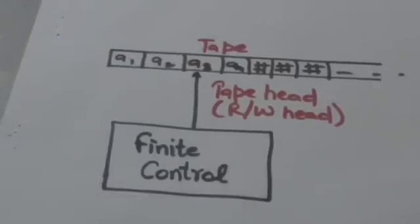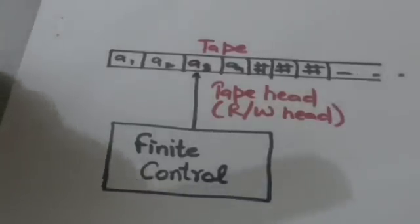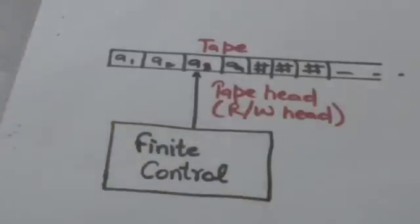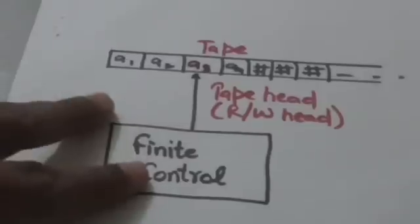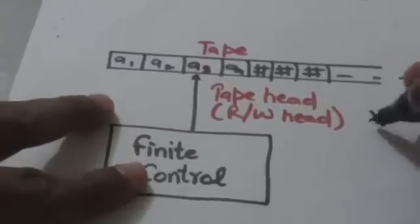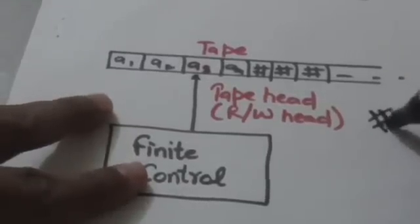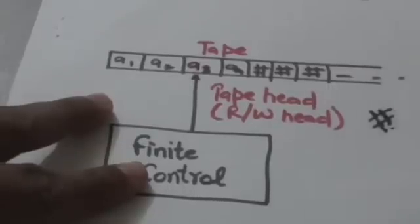If a square doesn't have any symbol on it, then it is said to have a blank symbol which is represented by hash. The hash symbol represents the blank.